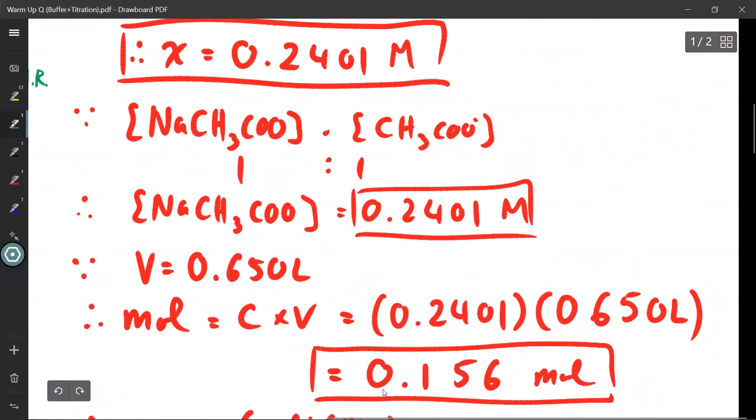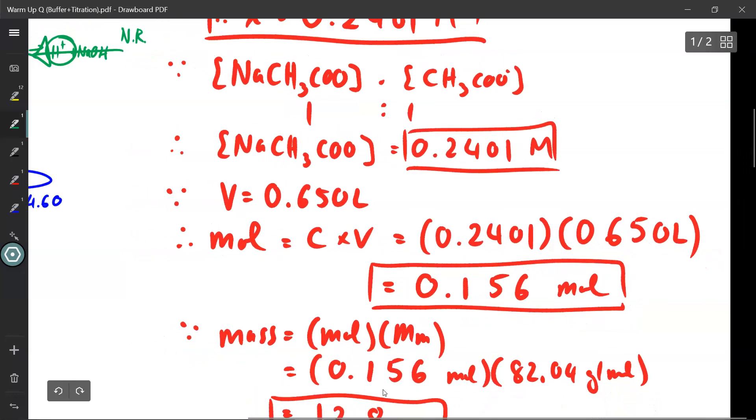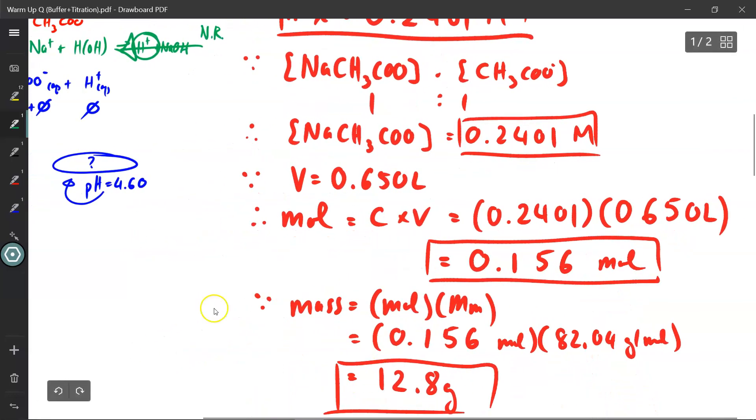I can use that information to find out what mass of sodium acetate did I need in order to achieve that concentration. The ratio of sodium acetate to acetate is 1 to 1, so I know the concentration of sodium acetate needs to be 0.2401 moles per liter. Since the volume didn't change, negligible volume change, the volume is 0.650 liters. Mole is equal to C times V.